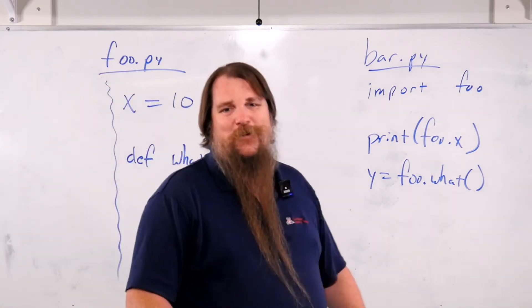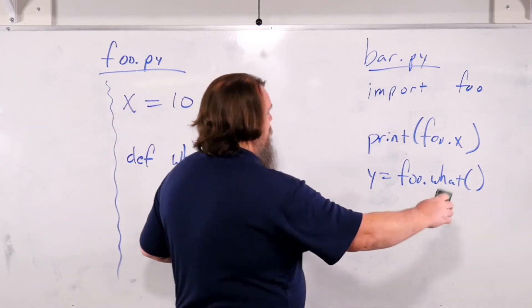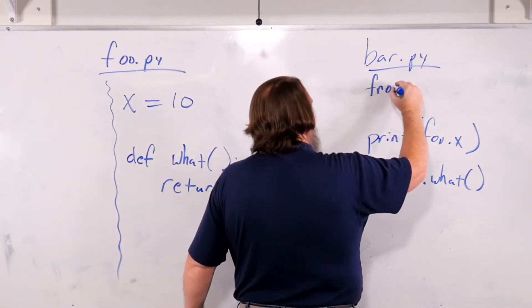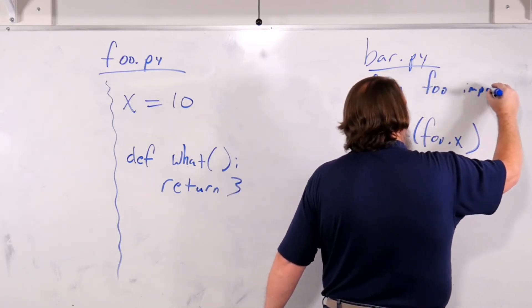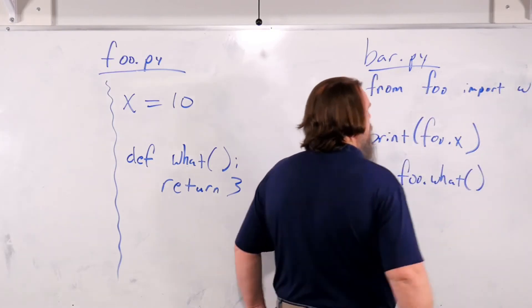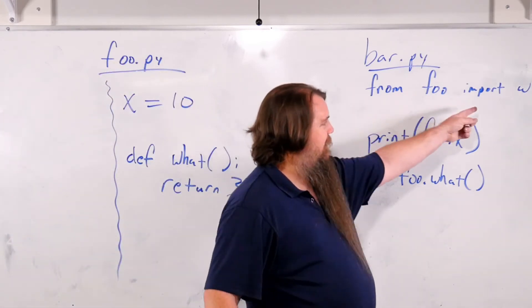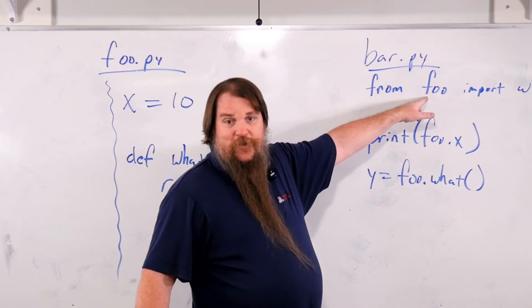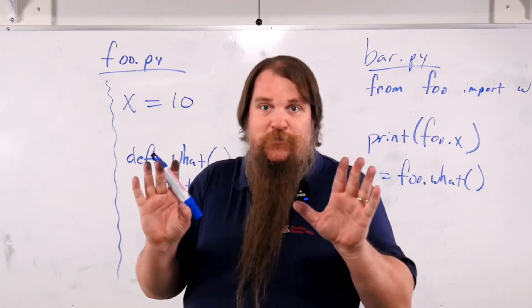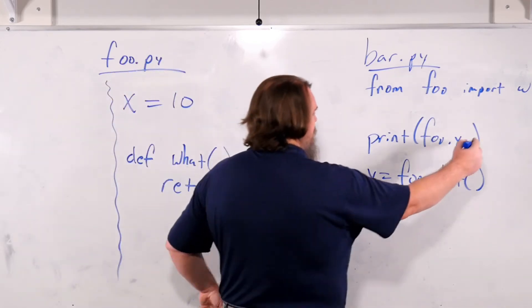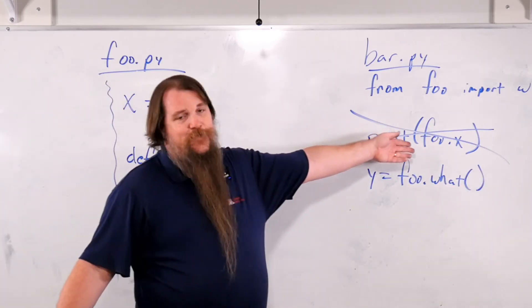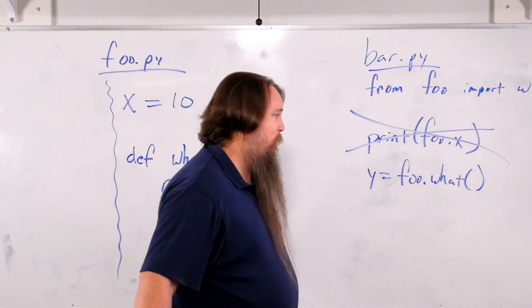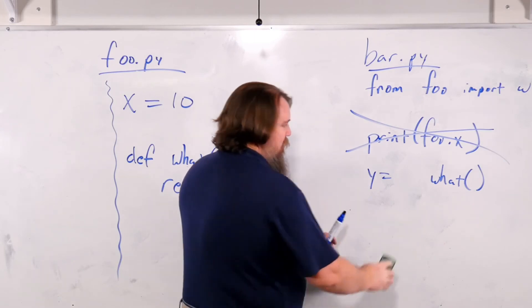Occasionally you may say, hey, I don't really want all the symbols from foo — what if I just wanted some of them? Well, what you can do is use a slightly different syntax: from foo import what. This is saying I want to go to the module foo and get the symbol what, but that's the only symbol I want. Which means foo.x is no longer going to work — you didn't get foo.x because you didn't ask for it. But there's another important change: when you use this syntax, from foo import what, you don't access it with foo.what — you just call what directly.